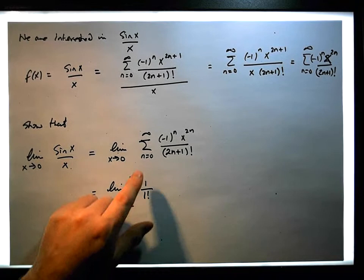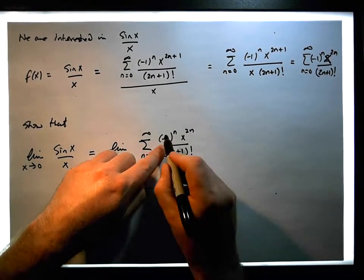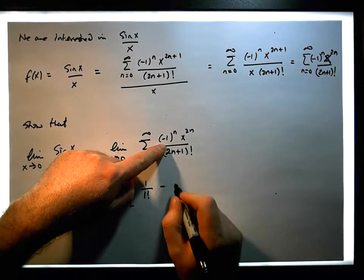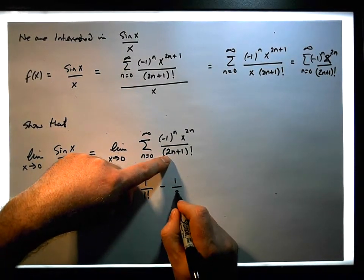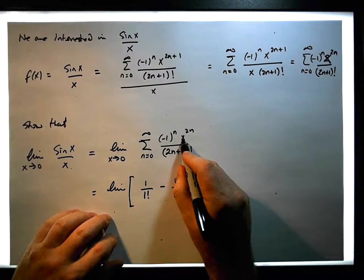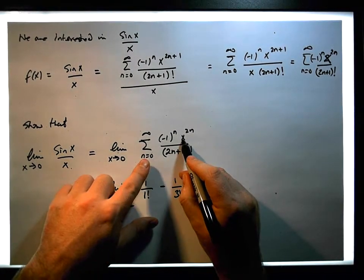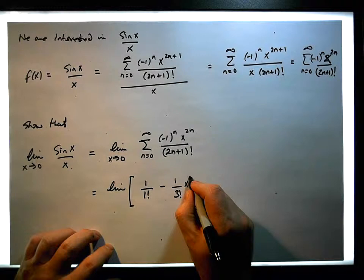When n equals 1, this becomes minus, and it's going to be 1 over 3 factorial, times x to the power of 2 times 1, which is x squared.